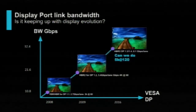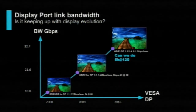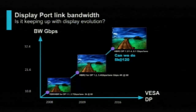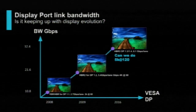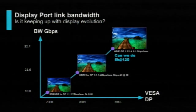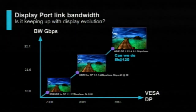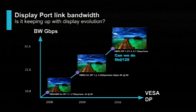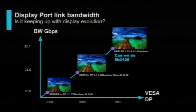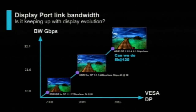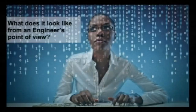The latest spec, DP1.4, adds a higher bitrate HBR3 and can do 8.1 gigabits per second per lane. So can it do 5K at higher frame rates and even higher resolutions? Let's see how that translates to the numbers and the math.